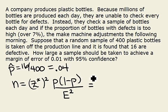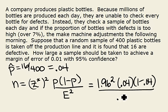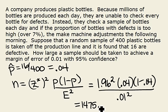95% confidence corresponds to a z-star of 1.96. So we get 1.96 squared, we replace p with our p-hat of 0.04, and we're told our error should be 0.01. When you calculate this value, you get something that's not a whole number — 1475.174.